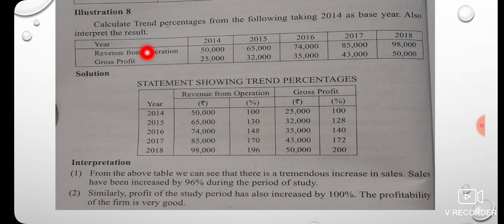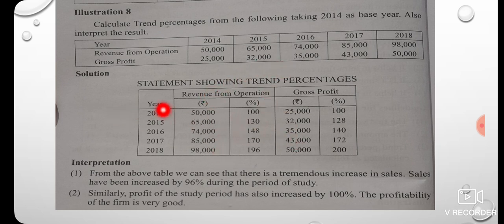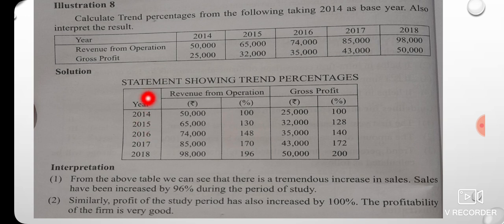The data is taken from 2014 to 2018. We will see the results for 2014 to 2018, looking at revenue from operations and gross profit. We can try the percentage here for 2014.